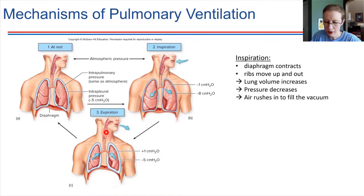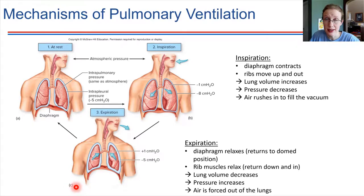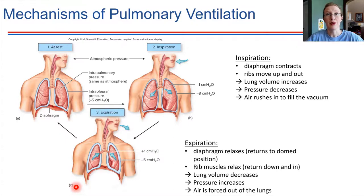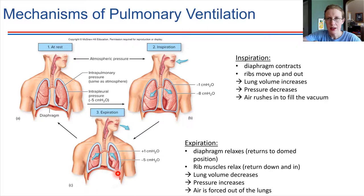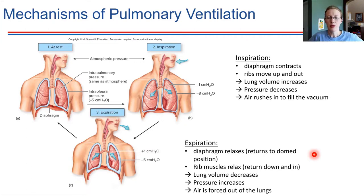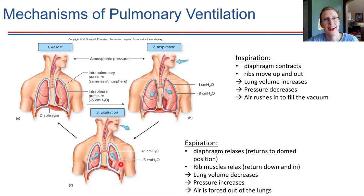During expiration, the diaphragm relaxes and domes back upwards. When you relax, a lot of the air goes out. Your ribs do the opposite of inspiration — they move inwards — and those two things work together to decrease lung volume, which increases the pressure and forces air out of the lungs.